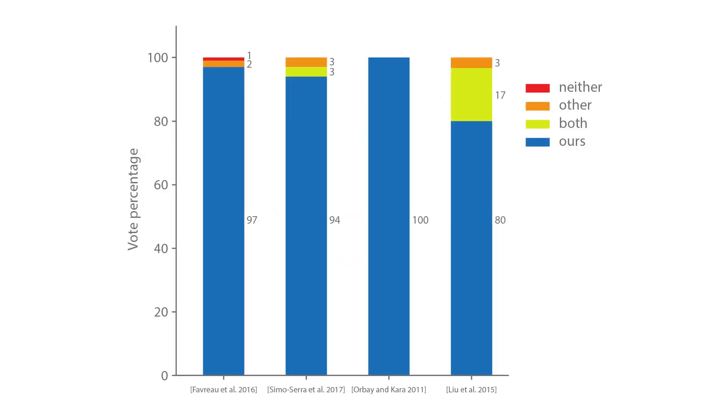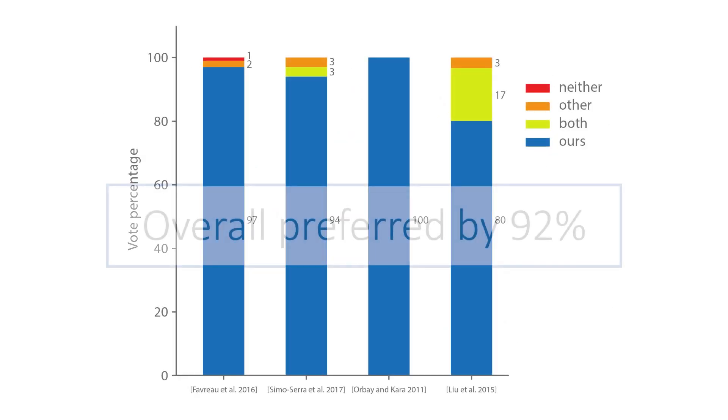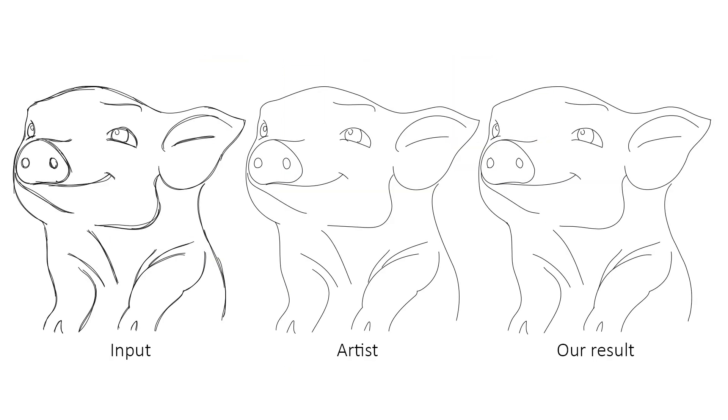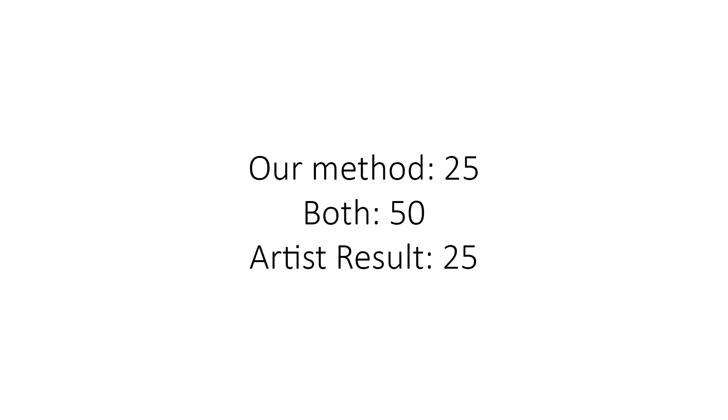In a qualitative user study, participants preferred our results 92% of the time and judged them as on par 7% of the time. Participants deemed our results to be on par with artist-generated ones, judging our results to be better or equal quality 75% of the time.